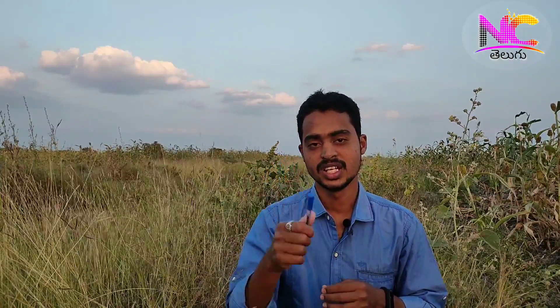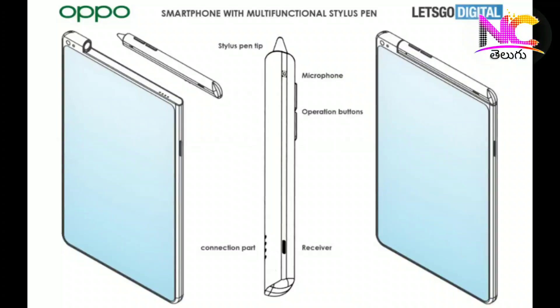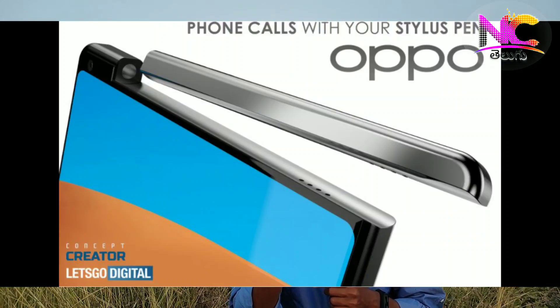First news is OPPO. OPPO has a stylus pen. We used to use the S-Pen for notes and text. We used to use a phone with a patent. There is also a microphone — we used to use a phone with a microphone. We used to use Bluetooth as well.